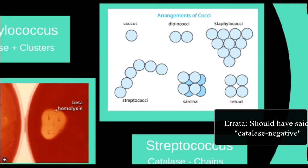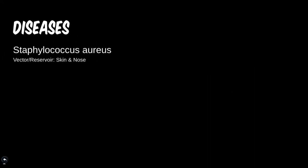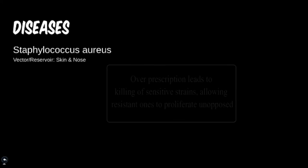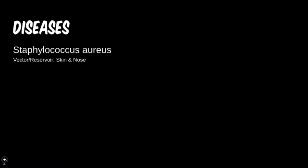Staphylococcus aureus is going to be one of the larger disease groups. It has some of the most associated infections and is one you'll hear about more commonly in clinics. Staph aureus has a more dangerous variant called MRSA, or methicillin-resistant Staphylococcus aureus. These can cause severe infections and are resistant to many of the antibiotics that work against normal sensitive strains of staph, which is why we have to be cautious about overprescribing antibiotics.